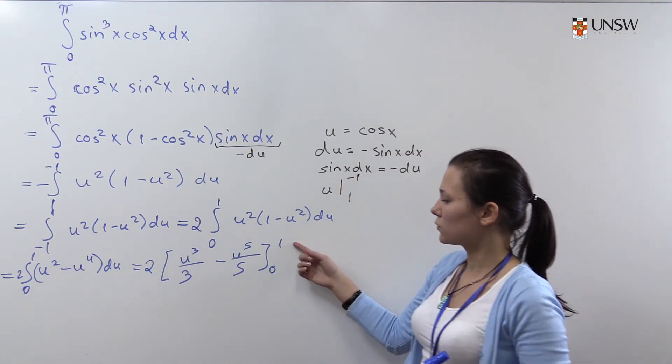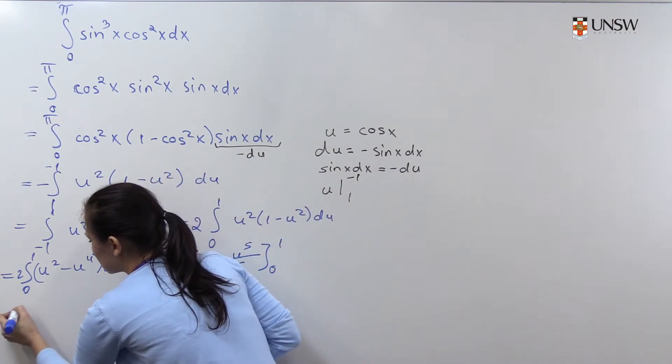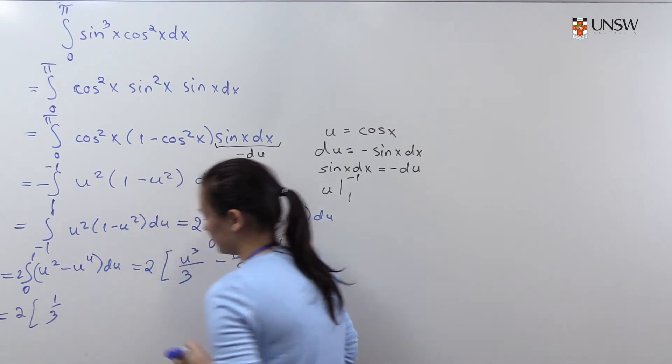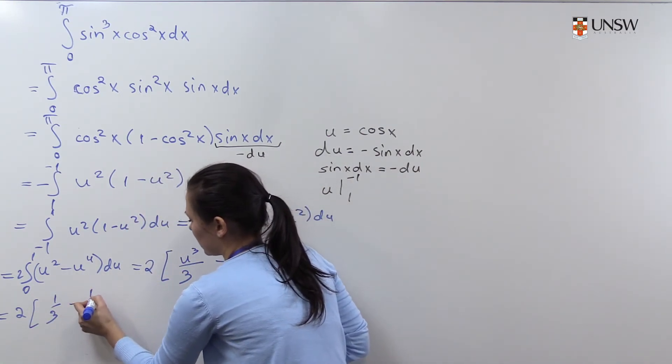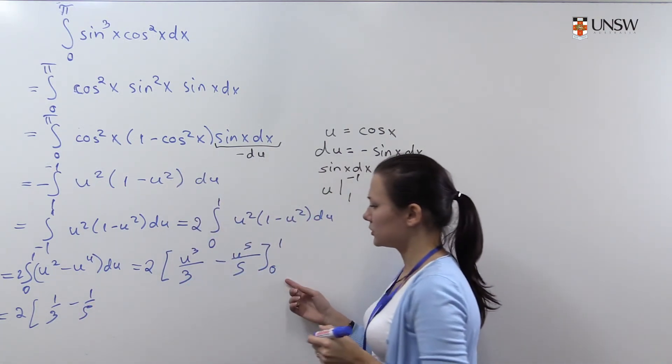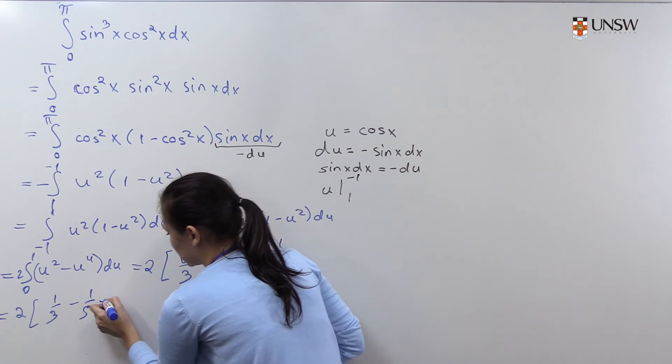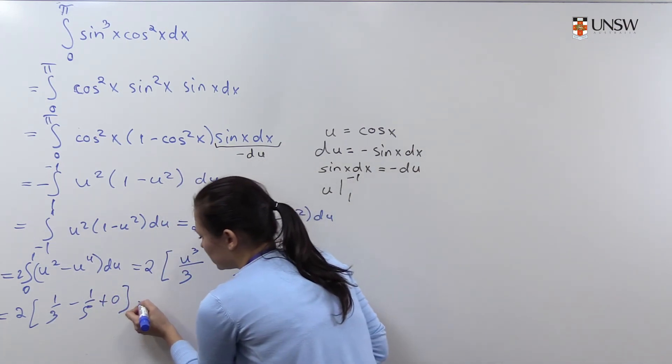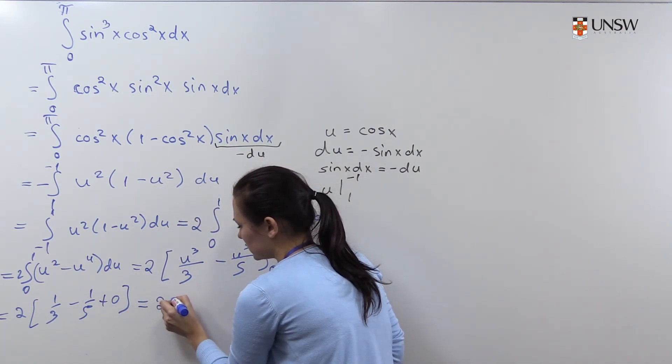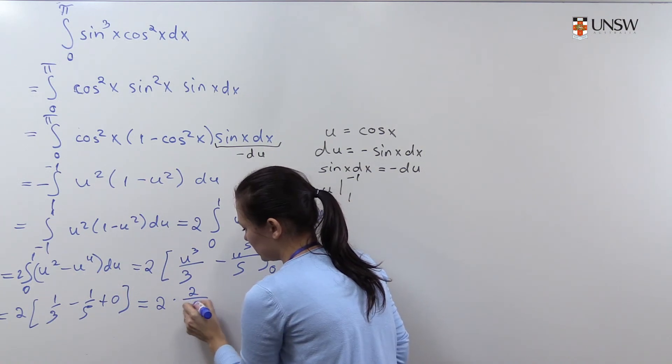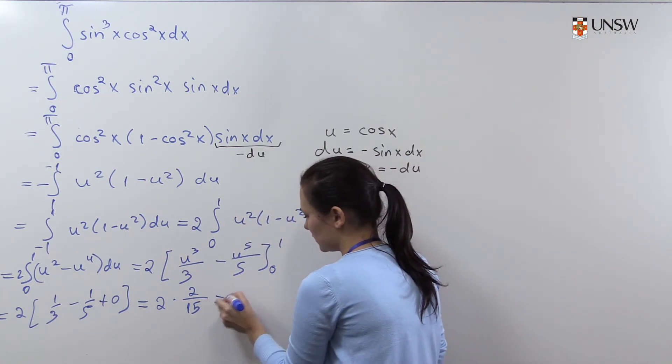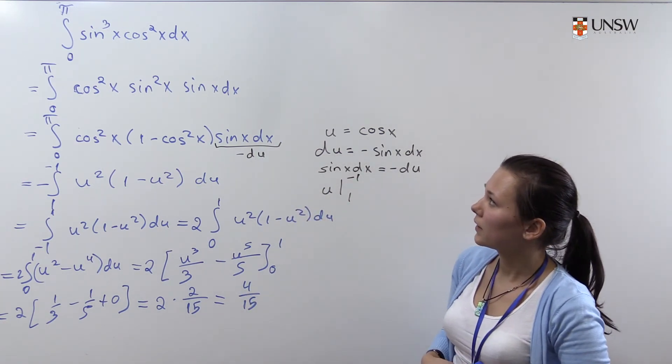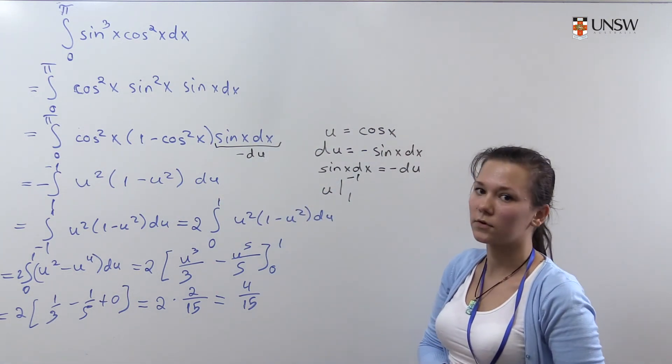Now we will substitute 1 and 0. When we substitute 1 it will be 1 over 3 minus 1 over 5. When we substitute 0 it will give us just 0. This equals 2 times 2 divided by 15, which is 4 over 15. So we have evaluated this integral; it's just 4 over 15.